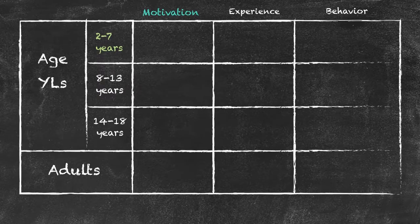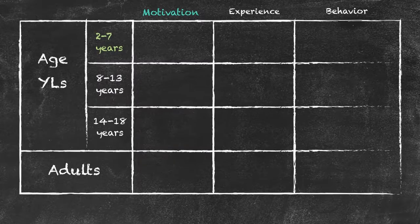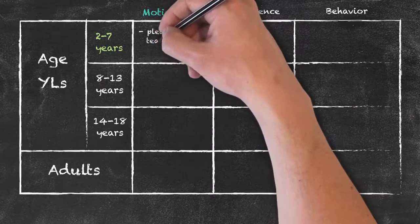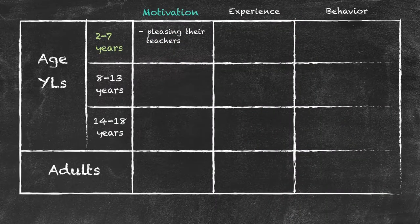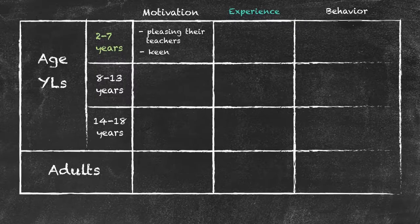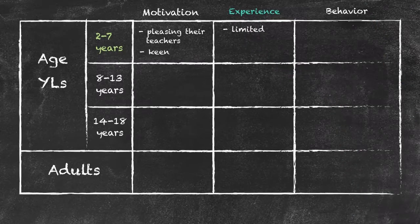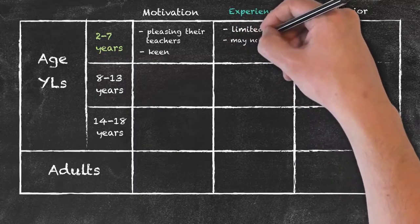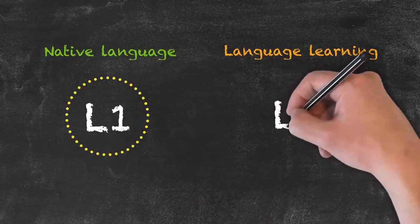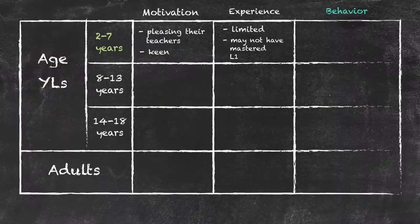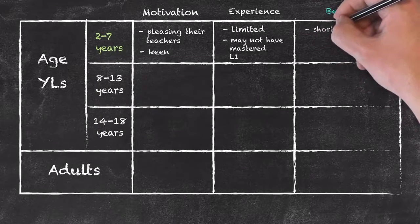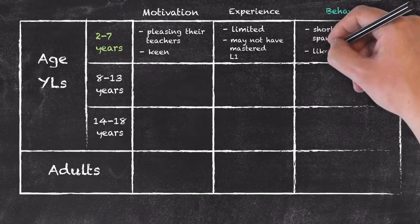If we run through the 2 to 7 years for each of those three factors, thinking about motivation, well in terms of motivation the 2 to 7 year olds, one of the main motivators for them while at school is to actually please their teachers. The other motivating factor that they bring with them at that particularly young age is the fact that they are keen. What experiences do they bring? They're limited in terms of life experiences and indeed at this very young age they may not even have mastered their own native language. We call that native language L1, the language that they're learning L2. What types of behavioural conditions do they bring to the classroom? Well obviously at that very young age they have a short attention span, but they do have a great sense of fun and they do like to play.